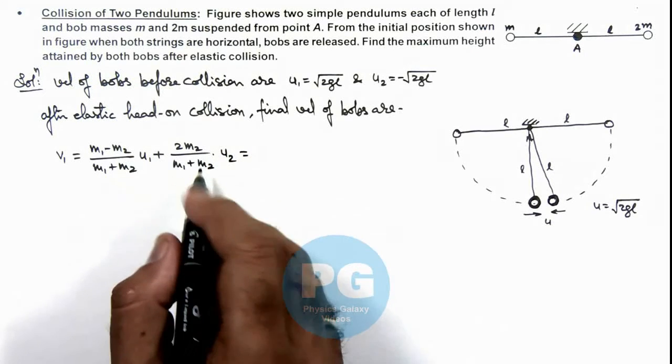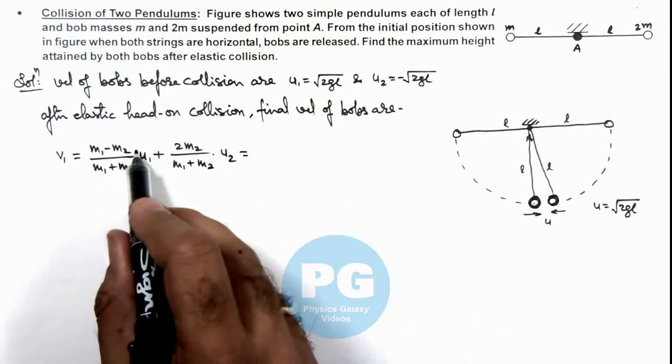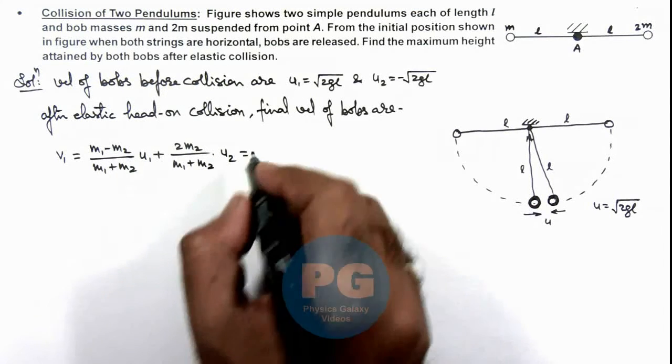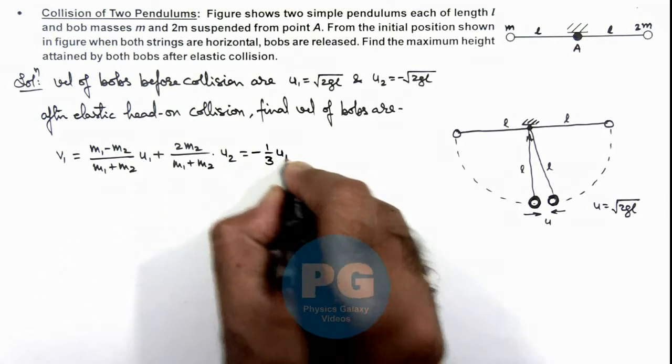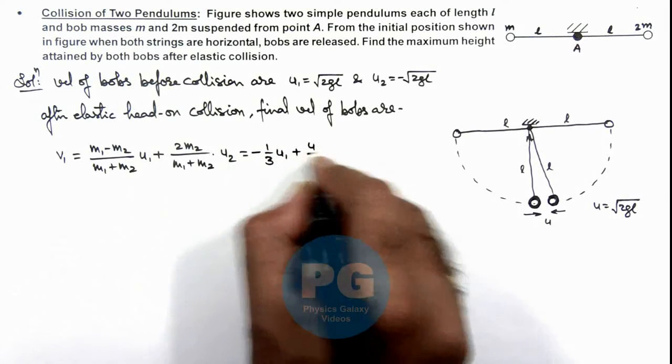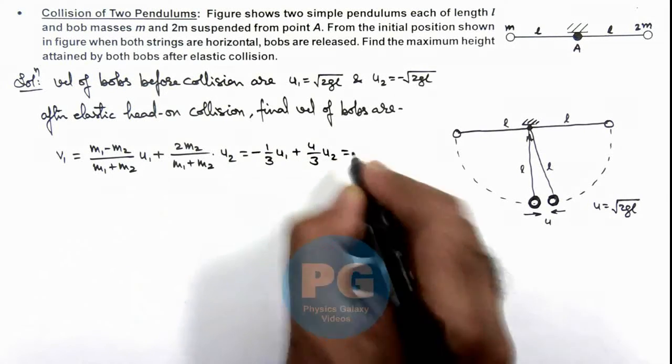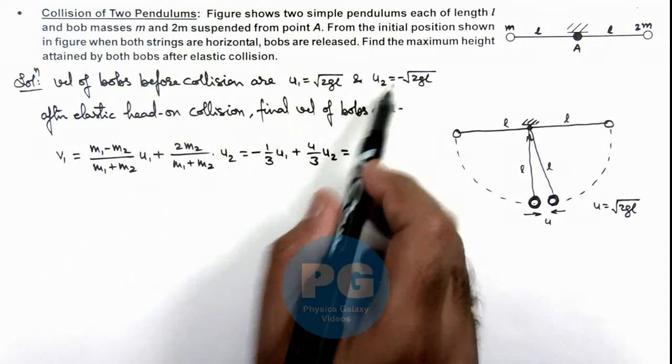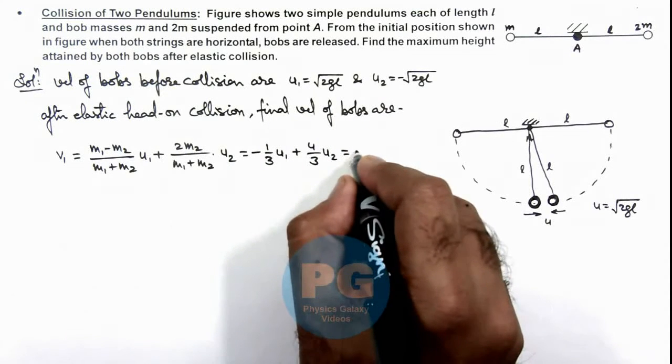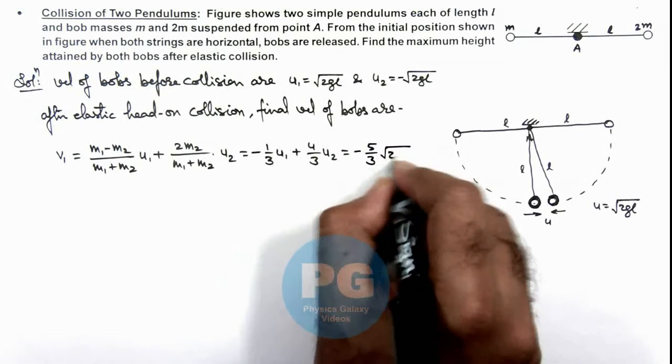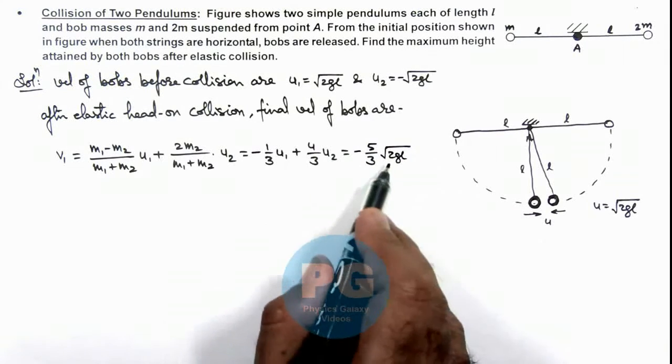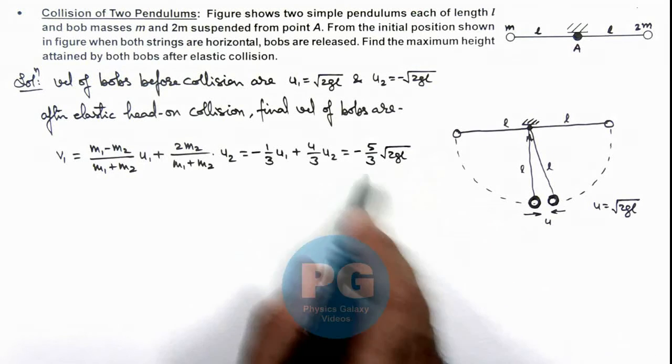If we substitute the values, m1 is m and m2 is 2m, so this will give us minus 1 by 3 u1 plus 4 by 3 u2. If you substitute the values of u1 and u2, the result we are getting is minus 5 by 3 times root 2gl. This is the velocity of first bob which will return with this much velocity.